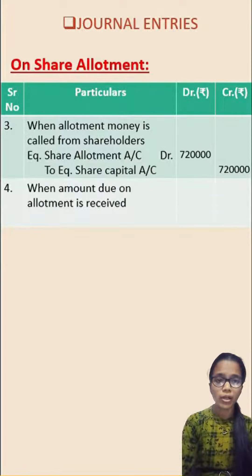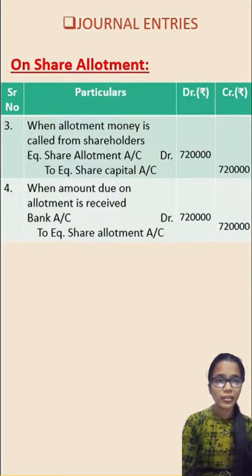Fourth, when the amount due on allotment is received, then the entry would be bank account debited to equity share allotment account.